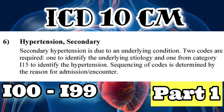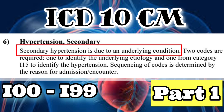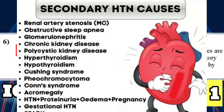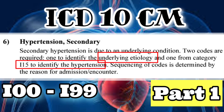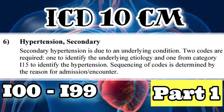The sixth point: secondary hypertension. Secondary hypertension means the high blood pressure is caused by some other underlying medical condition. In this scenario, code the underlying condition as principal diagnosis, followed by the secondary hypertension from the I15 series. This sequencing may change based on reason for admission — if the encounter is to treat the secondary hypertension, code I15 first; if treating the underlying condition, code that first followed by secondary hypertension.